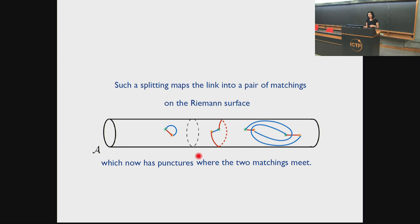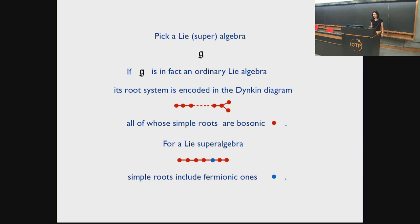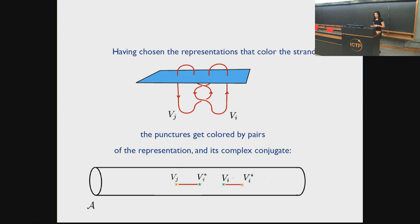Each matching gives you a collection of non-intersecting curves on the Riemann surface, which end on the punctures. Now pick a Lie superalgebra. If G is an ordinary Lie algebra, its root system is encoded in the Dynkin diagram, all of whose roots you should consider as bosonic. If you get a Lie superalgebra, then some roots are also fermionic. We'll color the strands of the link by representations of the Lie algebra, which we take to be minuscule. This minuscule condition is technical, and it's possible that one may be able to relax it.